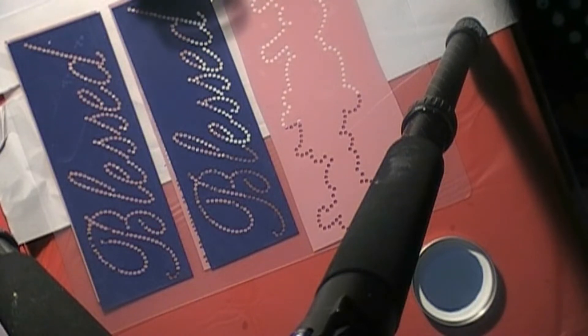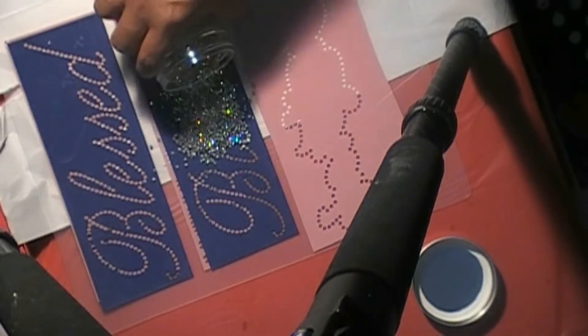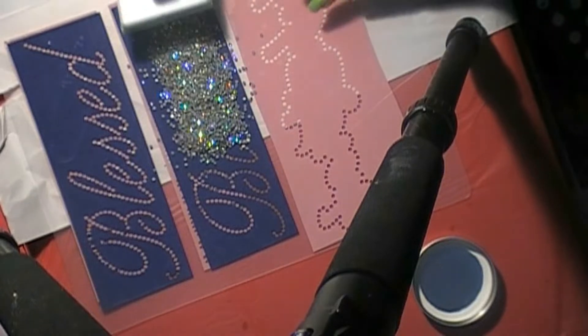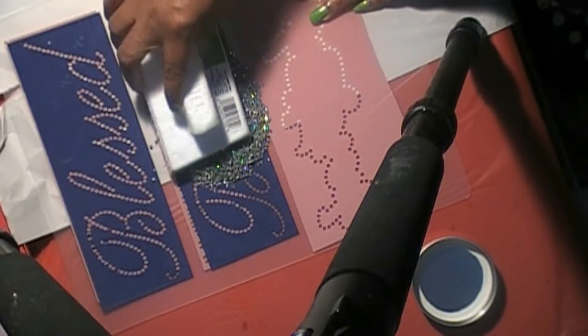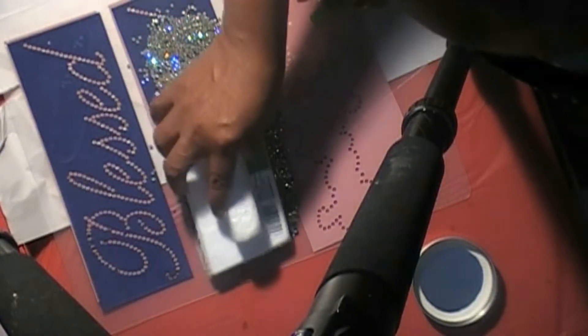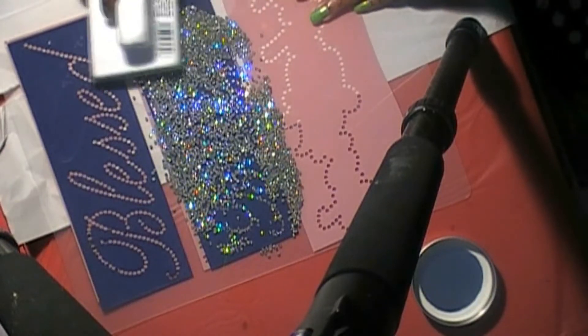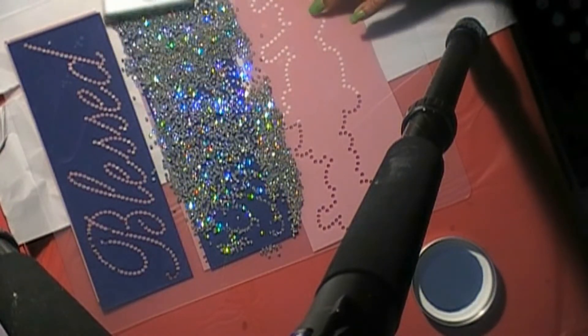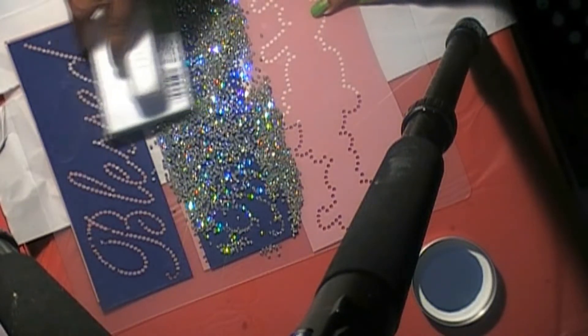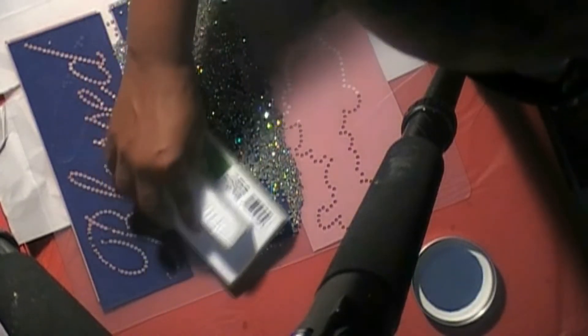I'm pouring rhinestones on the flock and I generally pour more than what is needed because the crowding of the stones also helps to push the stones into place. I'm just taking short slow circular motions not going too fast and then when I think that I got most of them brushed in place...